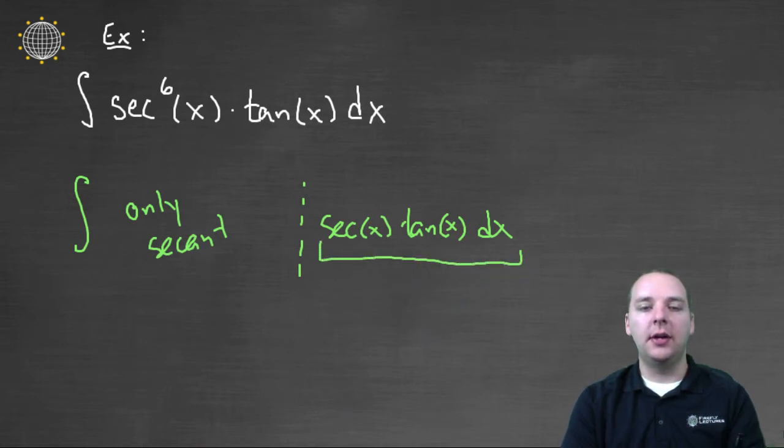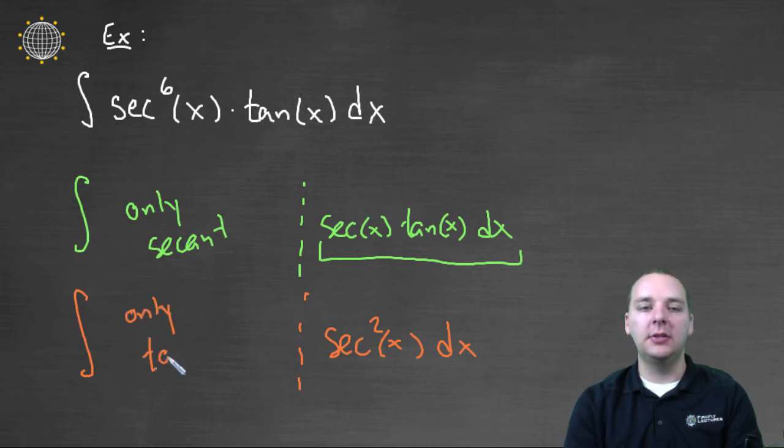The other idea would be to save a secant squared, and then write the rest of the integrand using trig identities in terms of only tangents. So we either want only secants or only tangents.